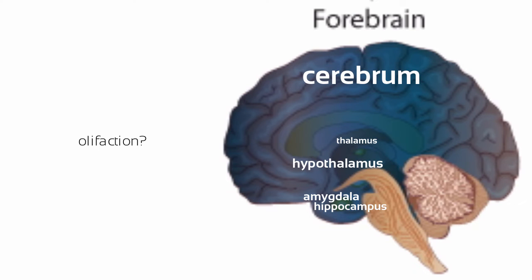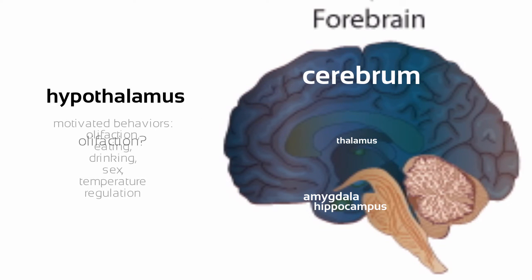Directly below the thalamus is the hypothalamus, which regulates motivated behaviors such as eating, drinking, sex, and temperature regulation. Regulation of these things is important because if you eat too little, you'll starve, and if you eat too much, you'll become obese. Both of these conditions are bad, so the hypothalamus helps us maintain optimal levels.